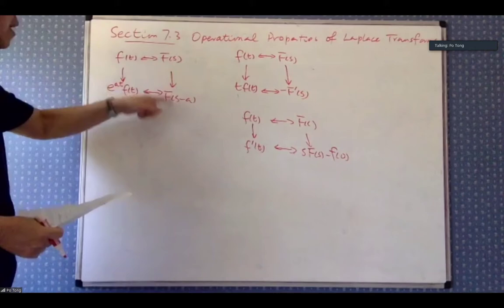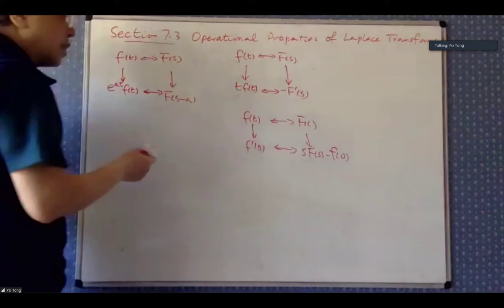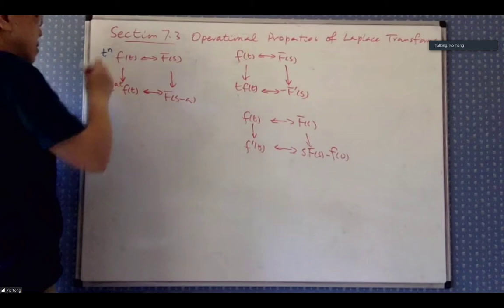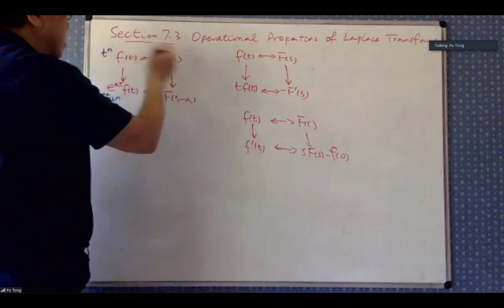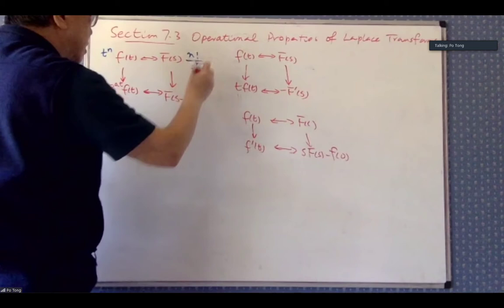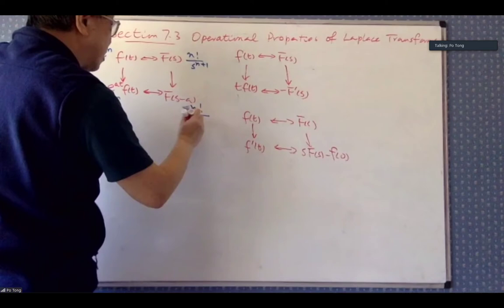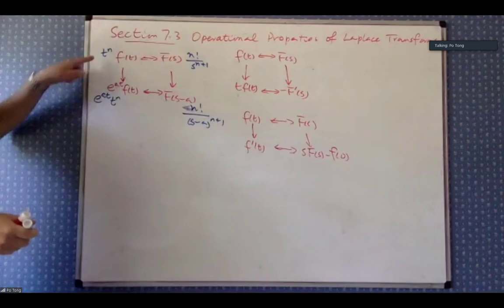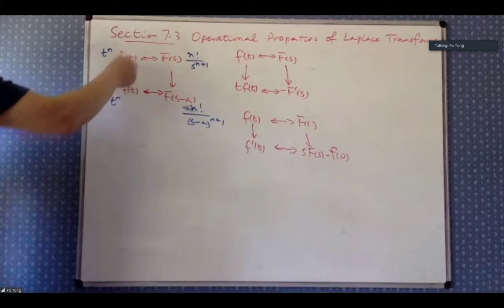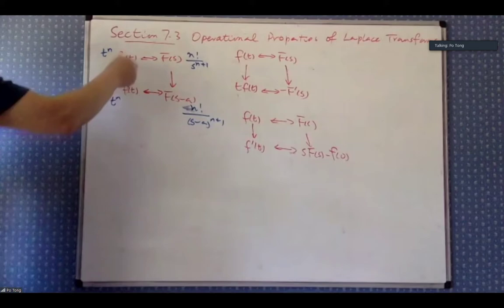We already have some examples which illustrate this. Remember we have t to the power n times e to the power at — that's n factorial over (s minus a). The blue one is an illustration of this general relationship. In general, the red one is true, and that is called the First Translation Theorem.